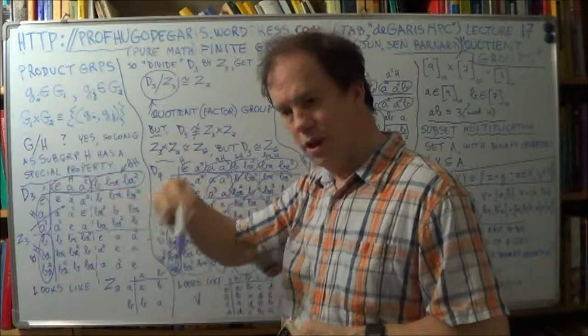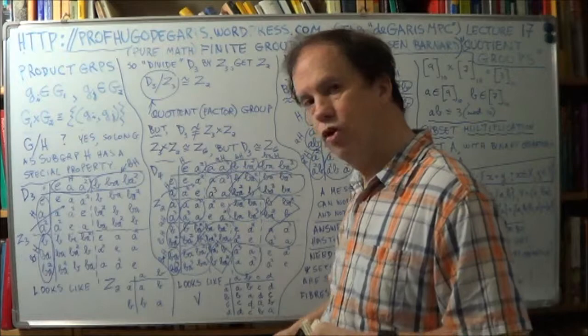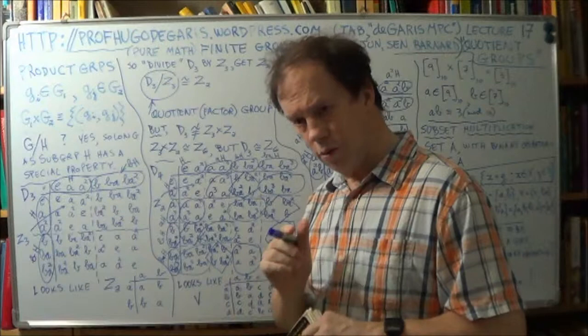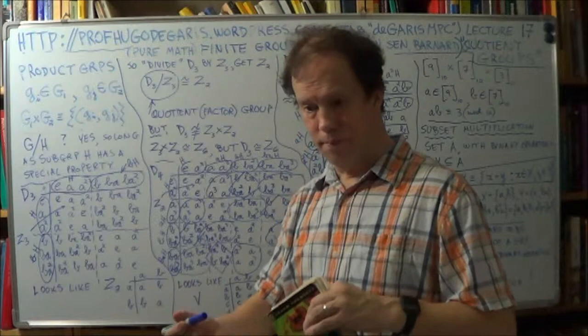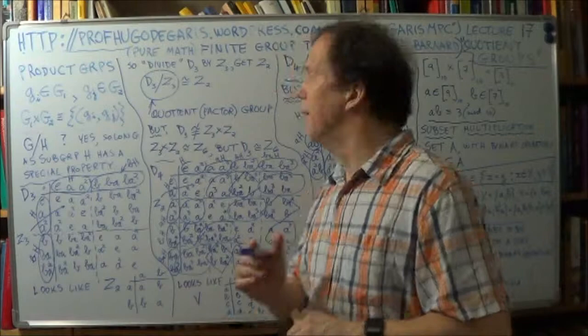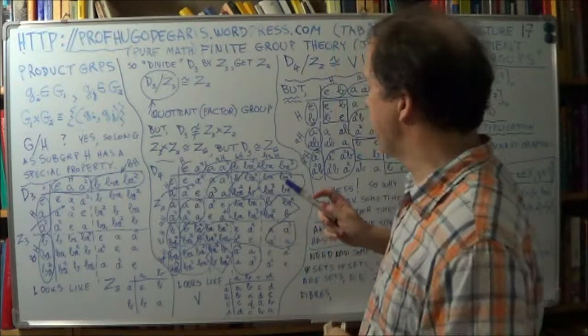You hear the word direct product, you know you're talking about groups. If you hear the term Cartesian product, that's more general, it's usually in the context of sets. Now, of course, a direct product is a Cartesian product. But Cartesian product is not necessarily a direct product. Because the sets you're talking about might not be groups. All right.